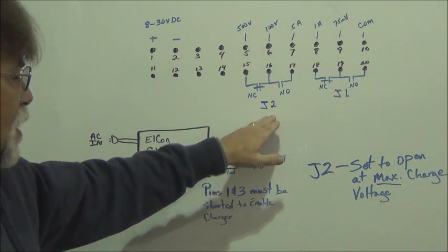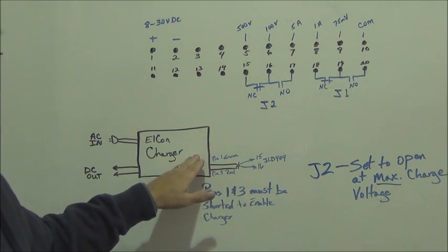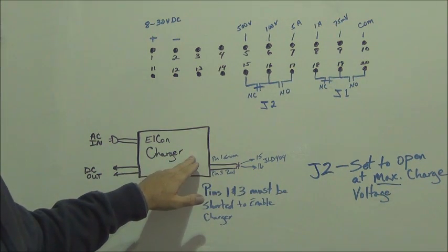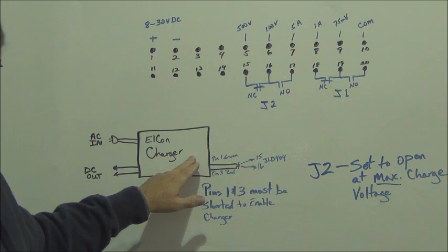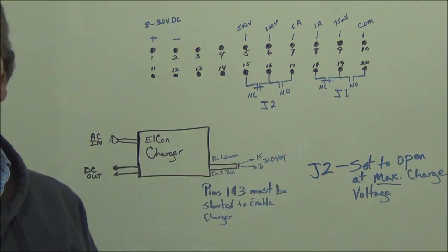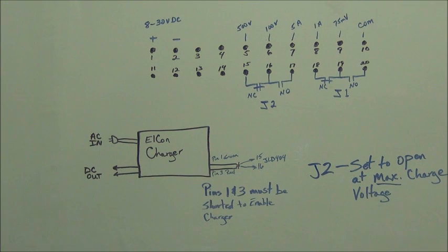We program it so that J2 will shut this off. So we have a redundancy built in. The charger internal program is going to shut it off at that specified point, and if it doesn't, our JLD-404 will.